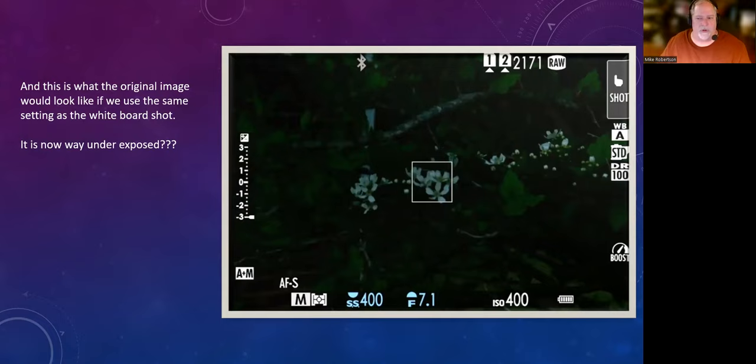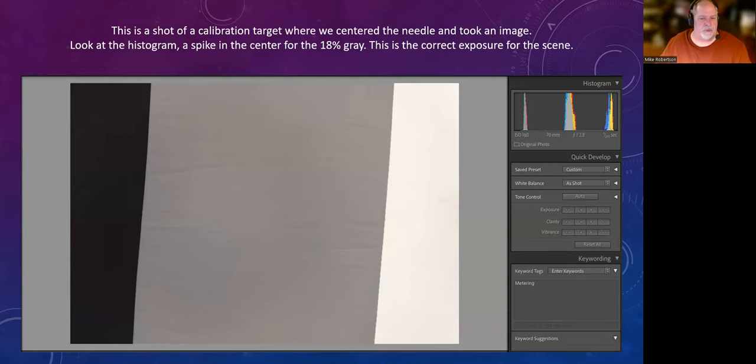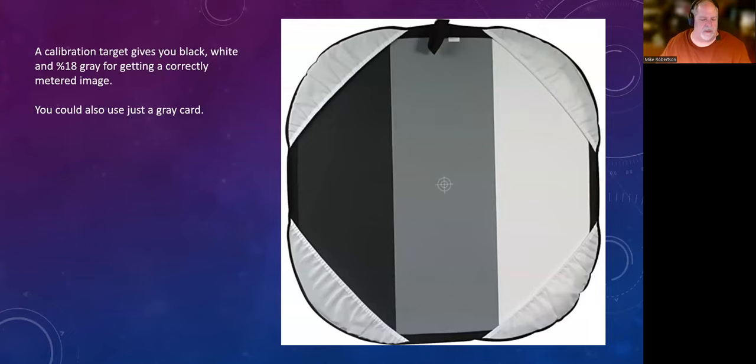So then we tried something a little different. I don't know if any of you've ever used one of these or not. It's called a calibration target. So a calibration target is black, 18% gray, and white. What that gives you on your histogram are three spikes. One for the black, one for the 18% gray, and one for the white. So this is pretty well correct exposure here. This is what a calibration target looks like.